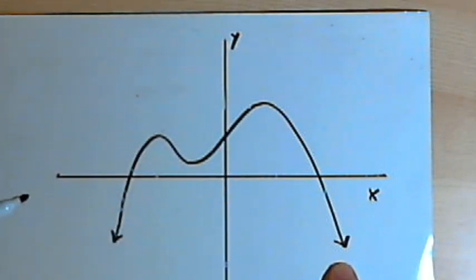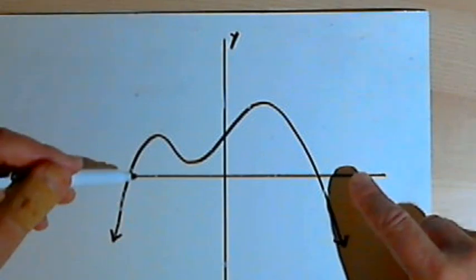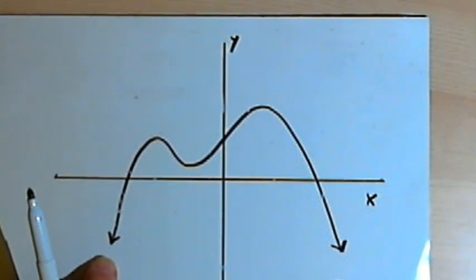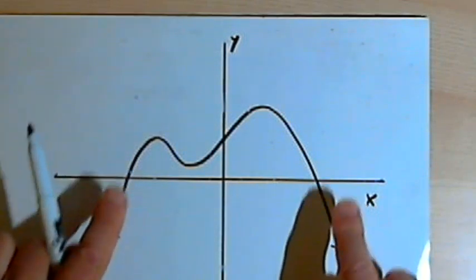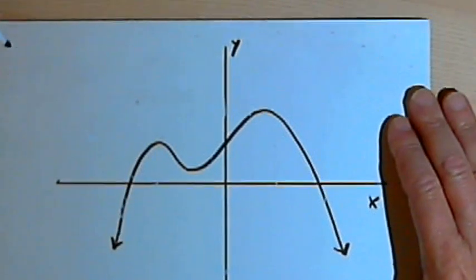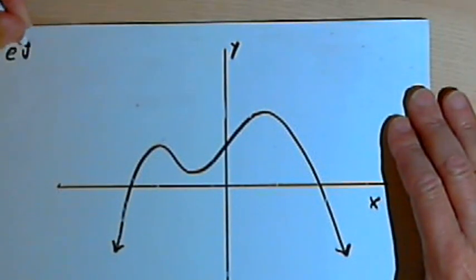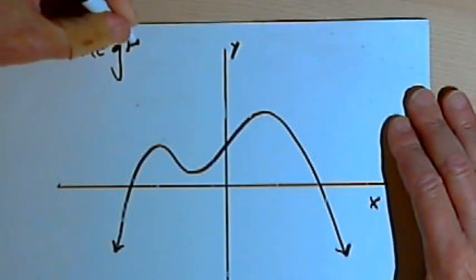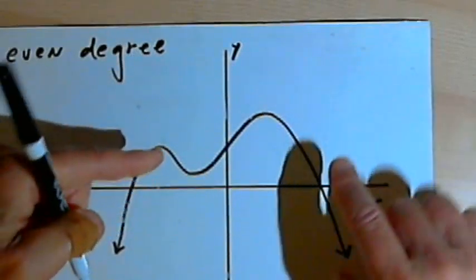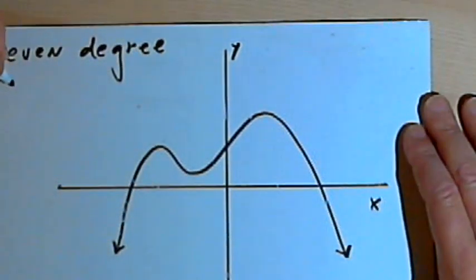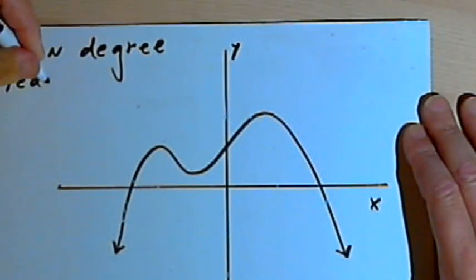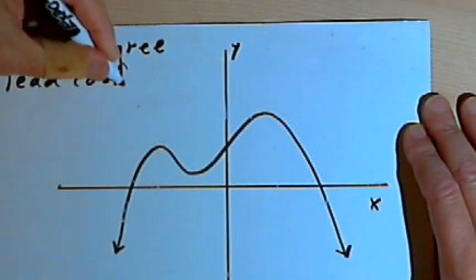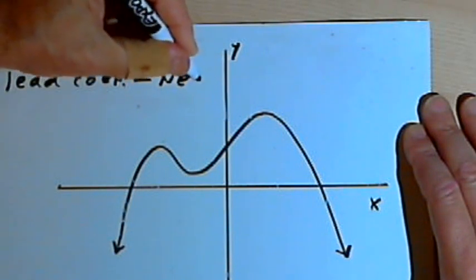So let's start with the end behavior. You notice that both ends of the graph go down. If both ends of the graph go in the same direction, either both down or both up, that means that the function had to be an even degree. Now if they both go down, that means the lead coefficient was a negative number. And in this case they both go down, so the lead coefficient is negative.